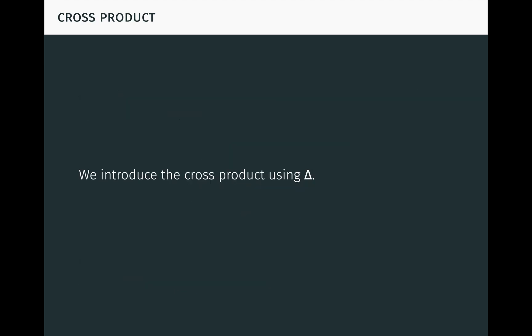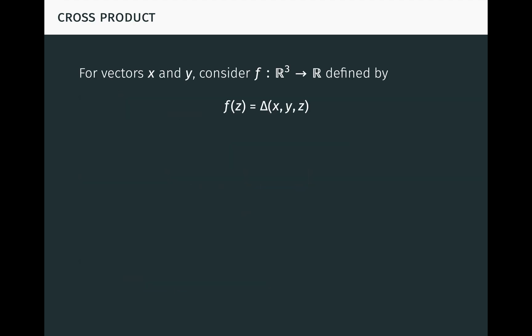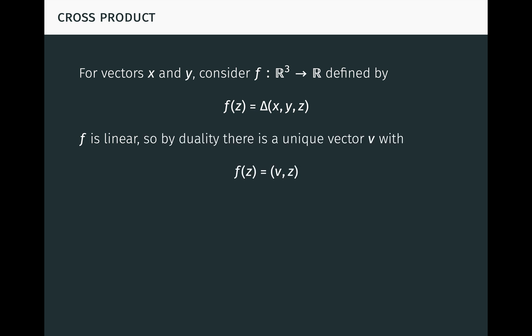We introduce the cross product using delta. For fixed vectors x and y, consider the function f from R3 to R, defined by f of z equals delta of x, y, z. Then f is linear since delta is multilinear. So by duality, there's a unique vector v with f of z equal to v times z under the inner product, for all z. Here we denote the inner product using parentheses. Duality tells us that the map which sends a vector w to the linear function w times blank under the inner product is a natural isomorphism from R3 to the space of linear functions on R3. So in particular f, which is a linear function, is the image under this map of a unique vector, which we're calling v.